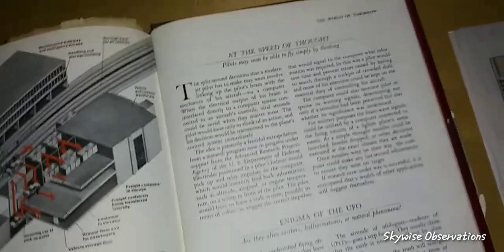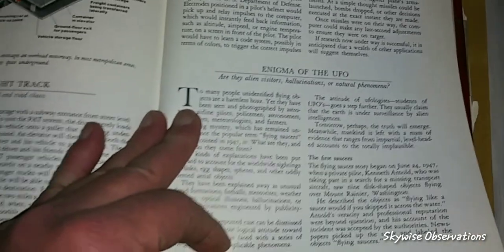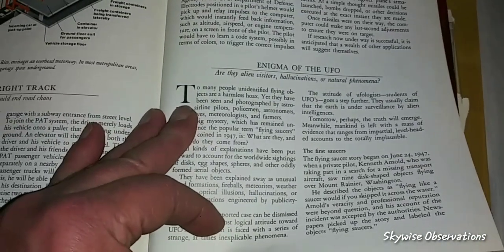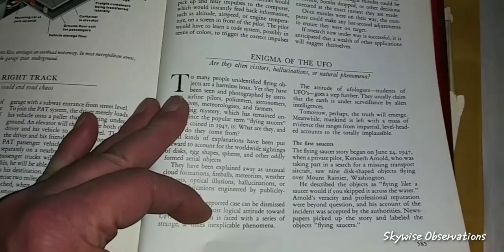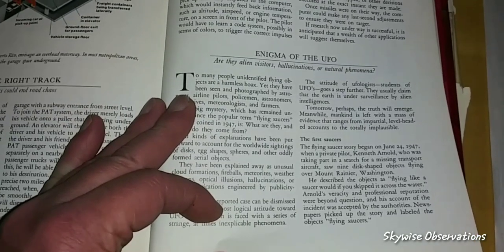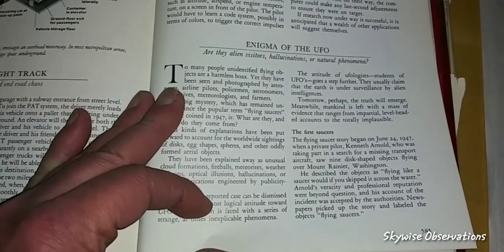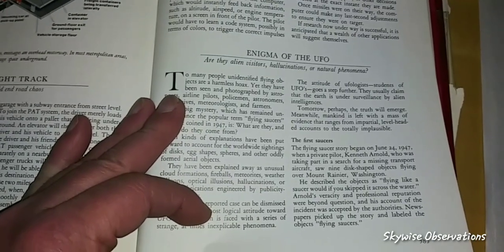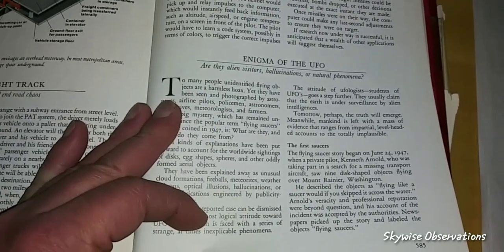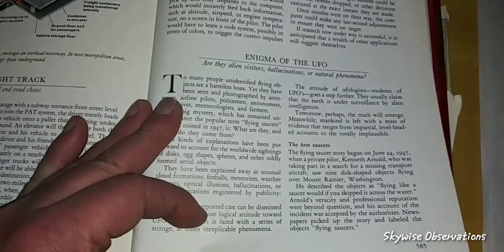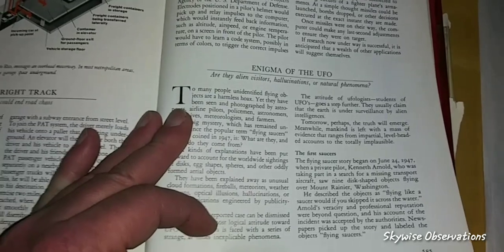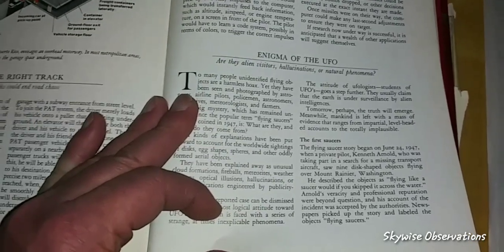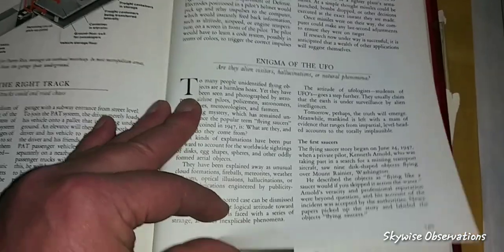And so we go into the enigma of the UFO. And of course, we have UAPs today. And what they're trying to state is that anything seen up in the sky are UAPs, phenomenons, whereas UFOs, I believe, go with the definition of being objects, unidentified flying objects. And there's a difference between objects and phenomenons.